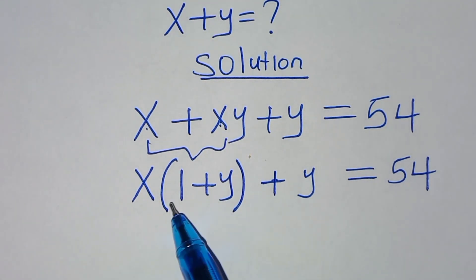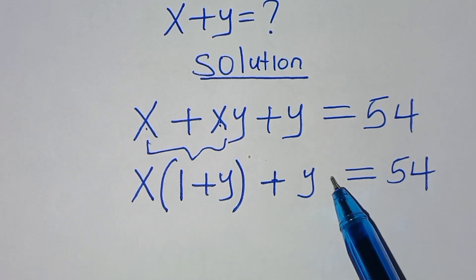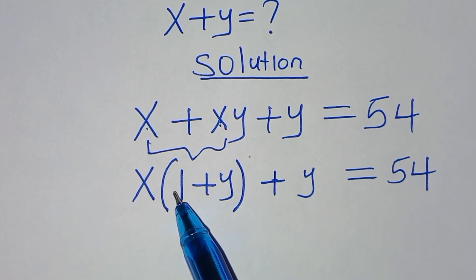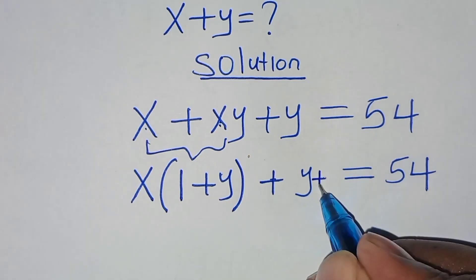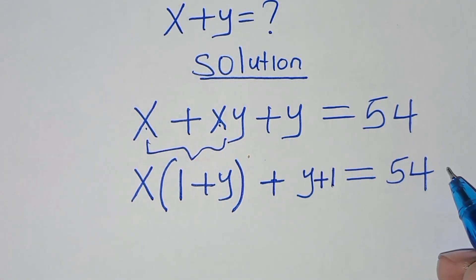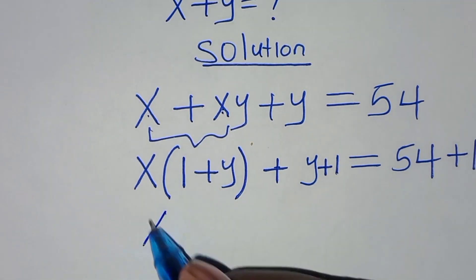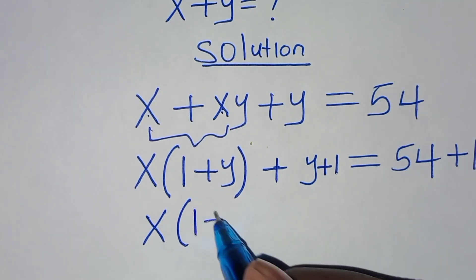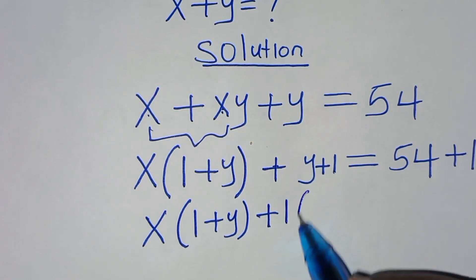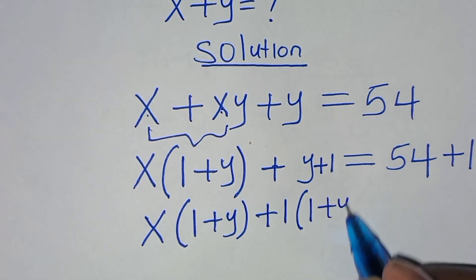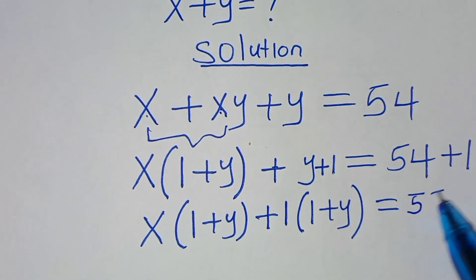Now to factor out here, we have 1 plus y, and also we should have y, that is 1 plus y. So to factor out this algebra equation, we need to add 1 on this side, and also we need to add 1 on the right-hand side. So now here we have x into the parentheses, this is 1 plus y, then plus 1 into the parentheses, here we have 1 plus y, this is equal to 54 plus 1, this is 55.